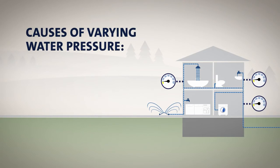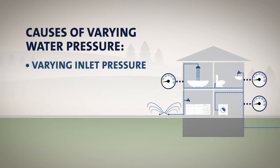There are two main causes of varying water pressure: varying inlet pressure and multiple open taps.